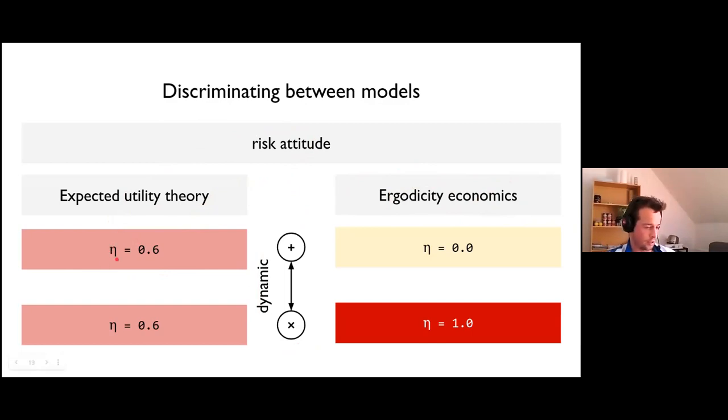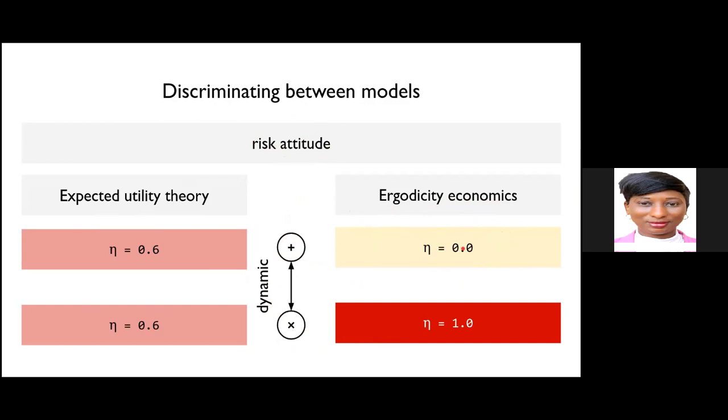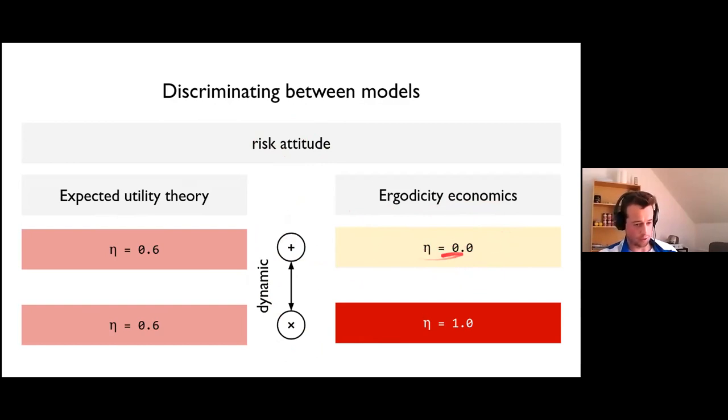We have this prevailing model in economics, the model of choice under uncertainty called the expected utility theory, and the new model which was created within the framework of ergodicity economics. These models predict differently when it comes to different wealth dynamics. The expected utility theory predicts that the risk attitude, represented here by this parameter eta, should be stable across different dynamics. So EUT says that risk attitude is really the characteristic of an individual and it should be stable.